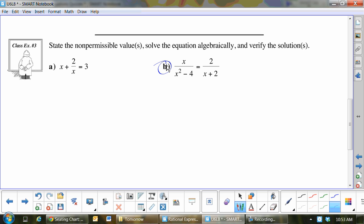Let's do B. What would you do to solve B? Difference of squares. So this will be x minus 2, x plus 2. What should I do next? Bring them up. So that's x times x plus 2, and 2, equals 2 times x minus 2, x plus 2.